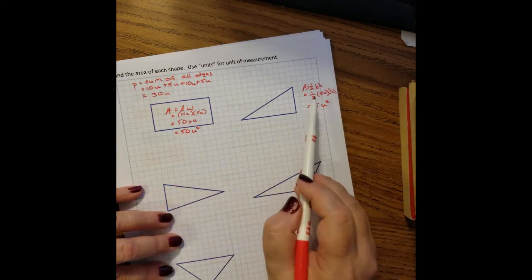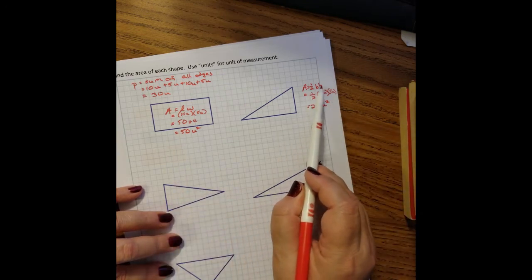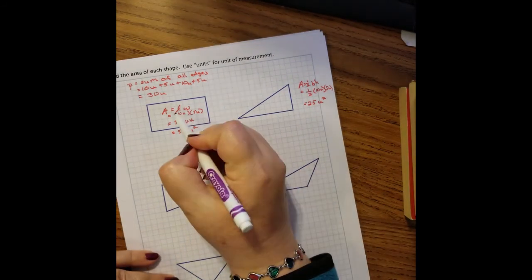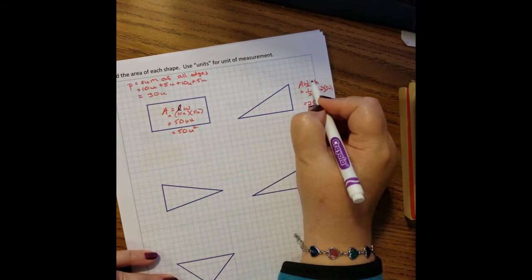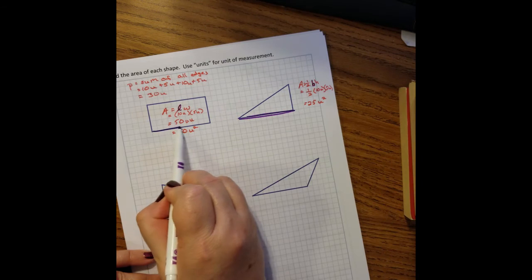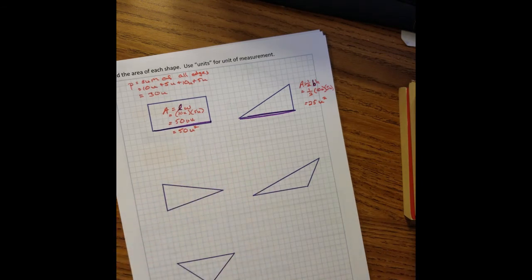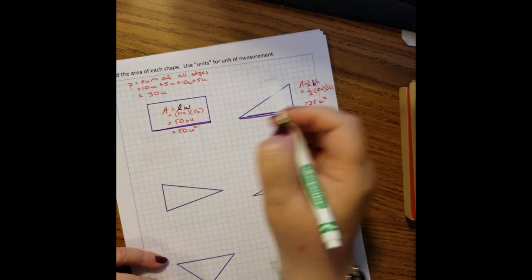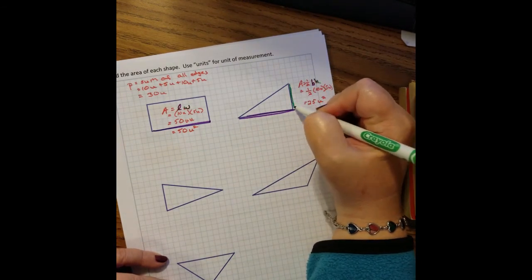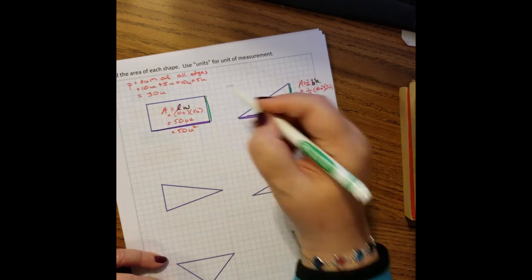Now the thing, the reason why we do one half base times height, the base and the height is the same thing. Your length and your base is both this line here, and they're both ten. But then your width and your height are both here, and they're the same. They're both five.